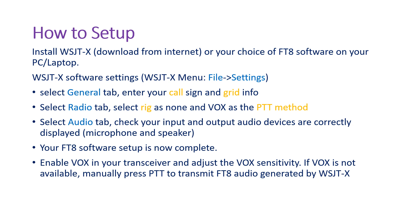Download WSJTX software from the internet and install it on your PC or laptop. Open WSJTX software, click on the File menu, and select the Settings option. Then select the General tab and enter your call sign and grid information.